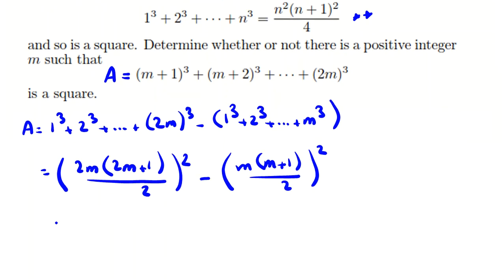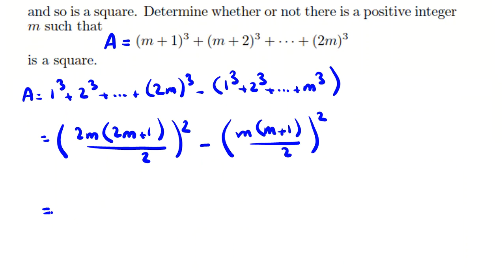And if we factor, it will be 4 times 2m² over 4 minus m² over 4.